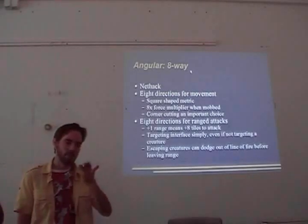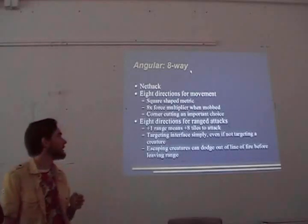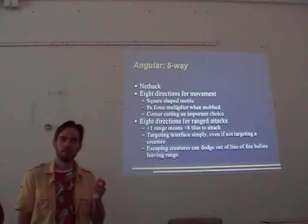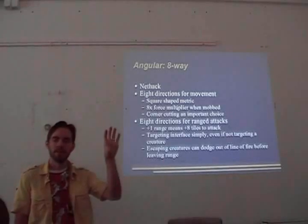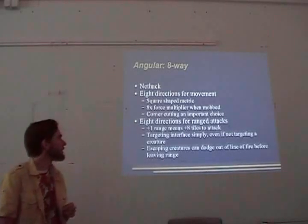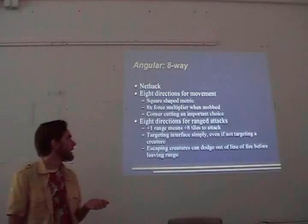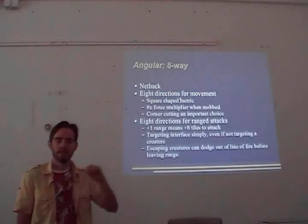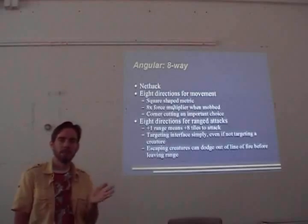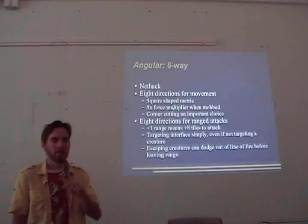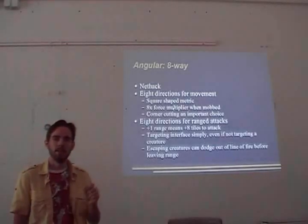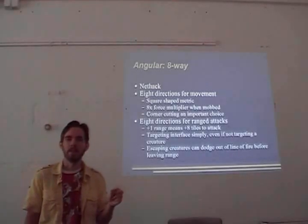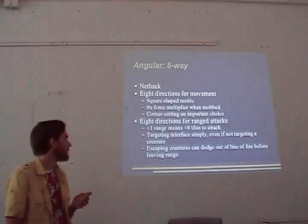Eight-way movement means you tackle corner directions on a grid representation. If you look at the spaces reachable in five steps, you get a square rather than a diamond because you can go along the diagonal corners. You have an eight times force multiplier when mocked, and corner cutting suddenly becomes an important choice. You hit an L-shaped corridor and can save turns by cutting the corner — even systems that penalize diagonals at 1.4 times cost, you're still better off taking the diagonal than two steps.